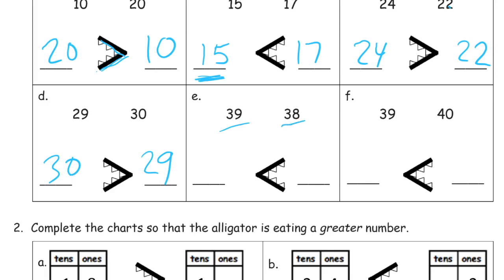39 is one more than 38. So the 39 is the one that gets eaten. 38 is less than 39. And here we have 39 and 40. 40 is the one that gets eaten here. 39 goes there. And we can't say 39 is greater than 40. We have to say 39 is less than 40, because it's less than 40.